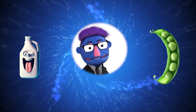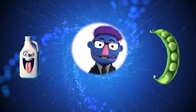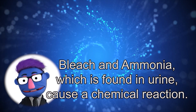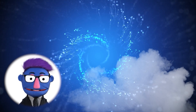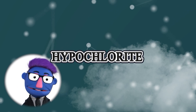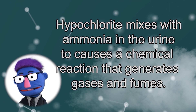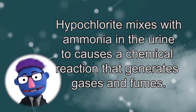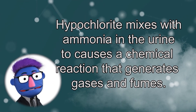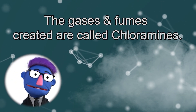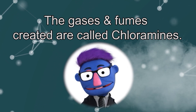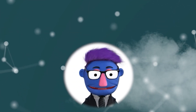What will happen when pee and bleach are mixed? Bleach and ammonia, which is found in urine, causes a chemical reaction. It will cause the bleach to foam up and create toxic fumes. The reason for this chemical reaction is due to hypochlorite. Once hypochlorite mixes with the ammonia in the urine, it causes a reaction that generates gases and fumes called chloramines. If a human consumes this, especially in a confined space, it is very dangerous.